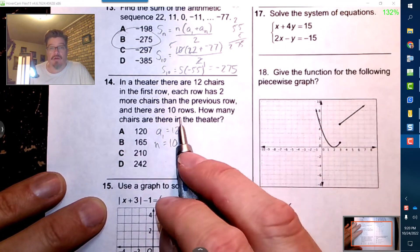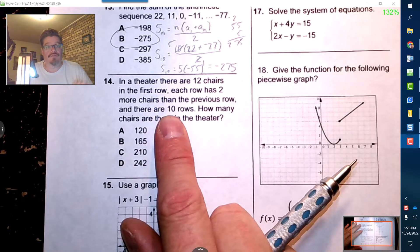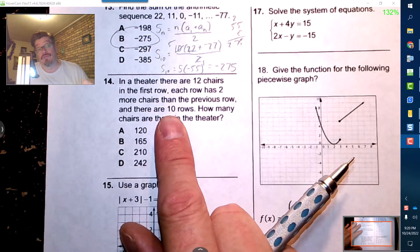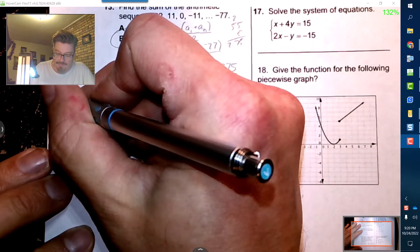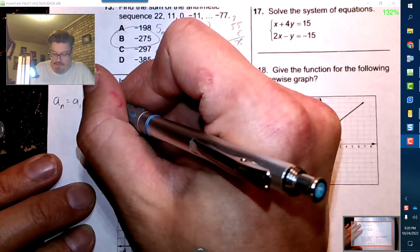Now the sum formula requires the first and the last and how many rows. Now I do know the n value, that's 10 rows, but I don't know how many are in the last row. 10 rows is a little bit too far down the road for me to do, so I need the other formula. The other formula looks like this: you start off with your initial value and then you add this little formula here.